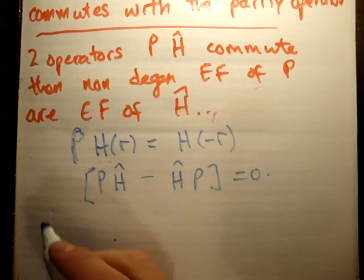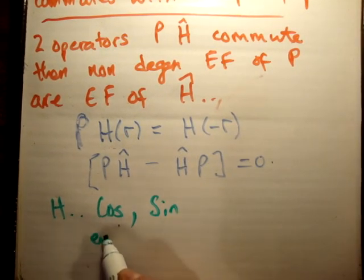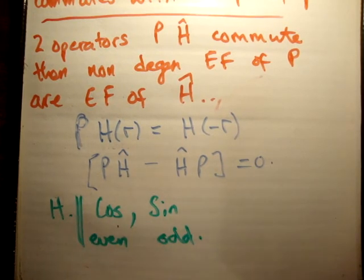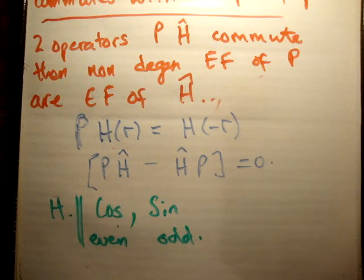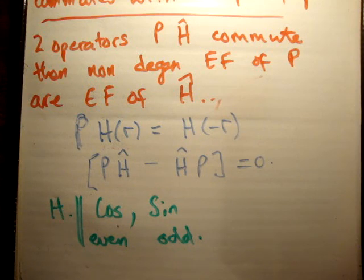And what did we find? We found that the Hamiltonian sometimes had cosine solutions and sometimes had sine solutions — cosine solutions are even and sine solutions are odd. So if something commutes with the parity operator, then its eigenfunctions are even or odd. The Hamiltonian commutes with the parity operator in this case, therefore the eigenfunctions are even or odd. Non-degenerate eigenfunctions of the Hamiltonian are also eigenfunctions of the parity operator. This is an important concept, and if you understand it, it will help you a lot in the future. Thanks for watching — please share it with your friends and subscribe to my channel.